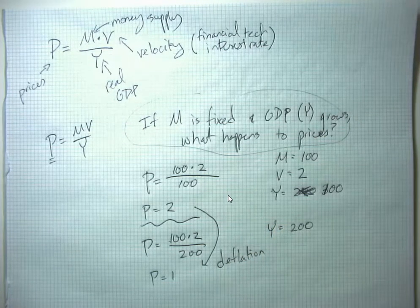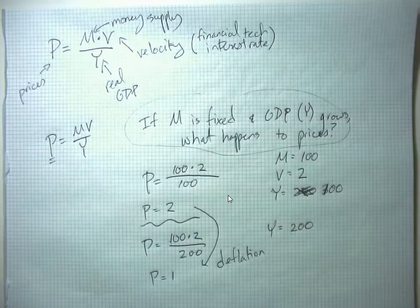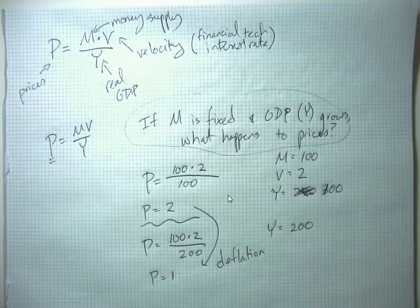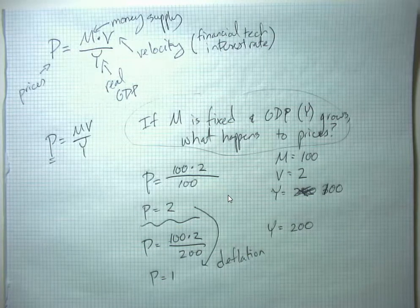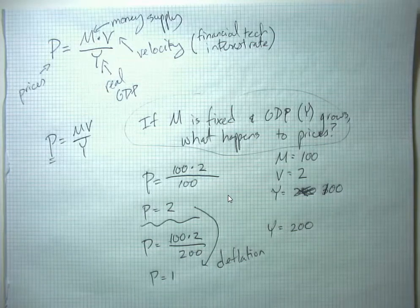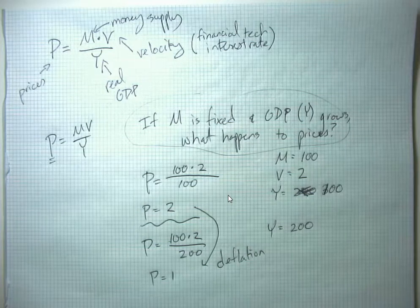This is actually what happened for much of the 1800s when we had a gold standard. The gold supply was relatively fixed - yes, people discovered new gold supplies from time to time, but it was pretty fixed. And the economy was growing strongly as the US and Western Europe went through the Industrial Revolution. We actually saw, year by year, that there tended to be deflation.